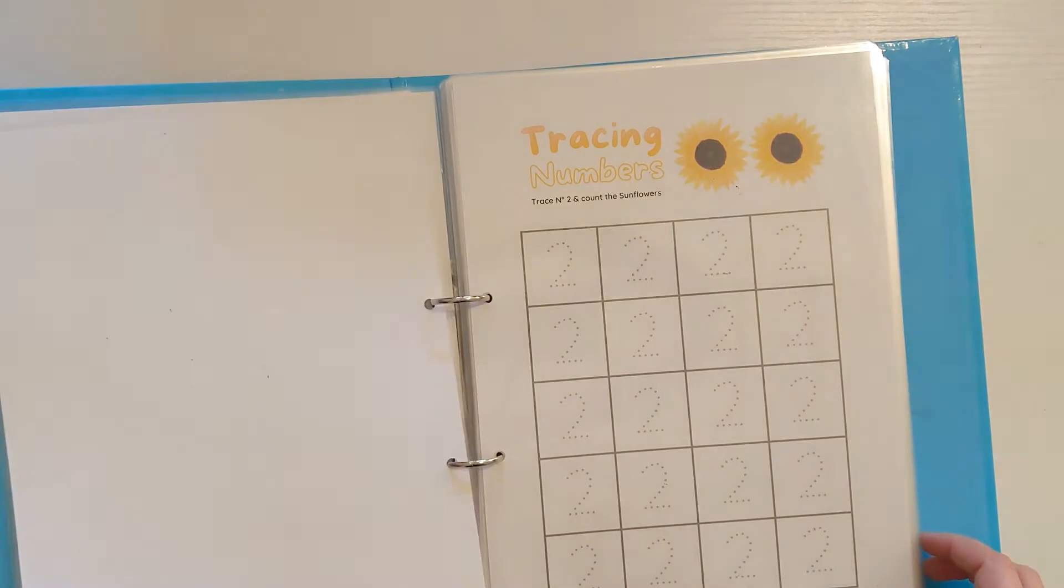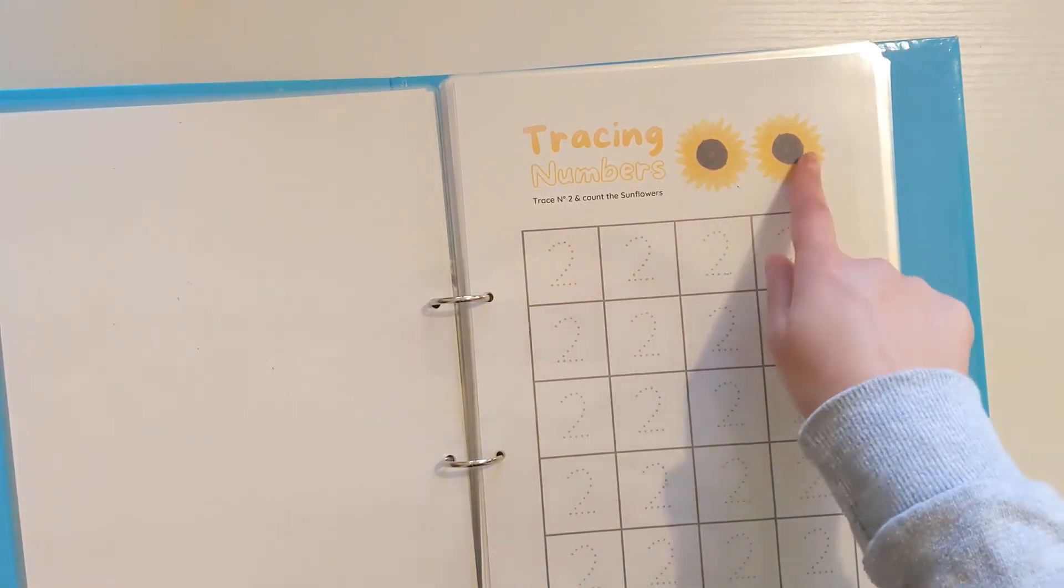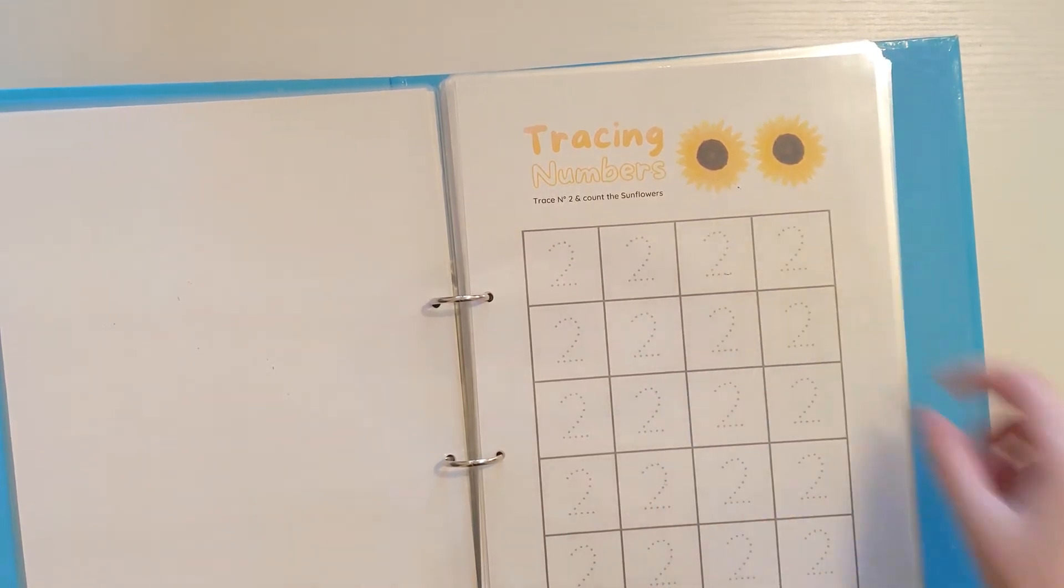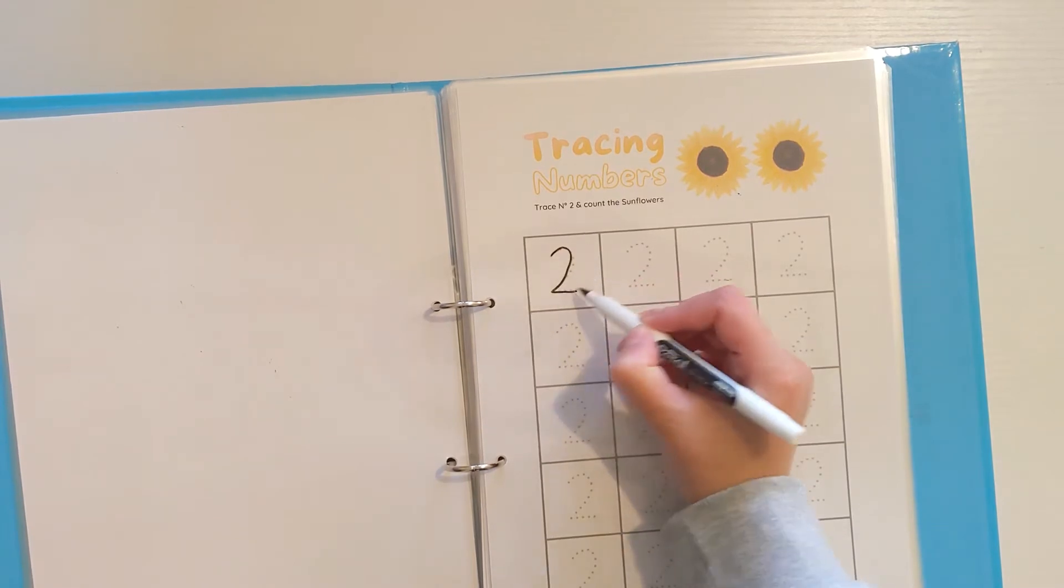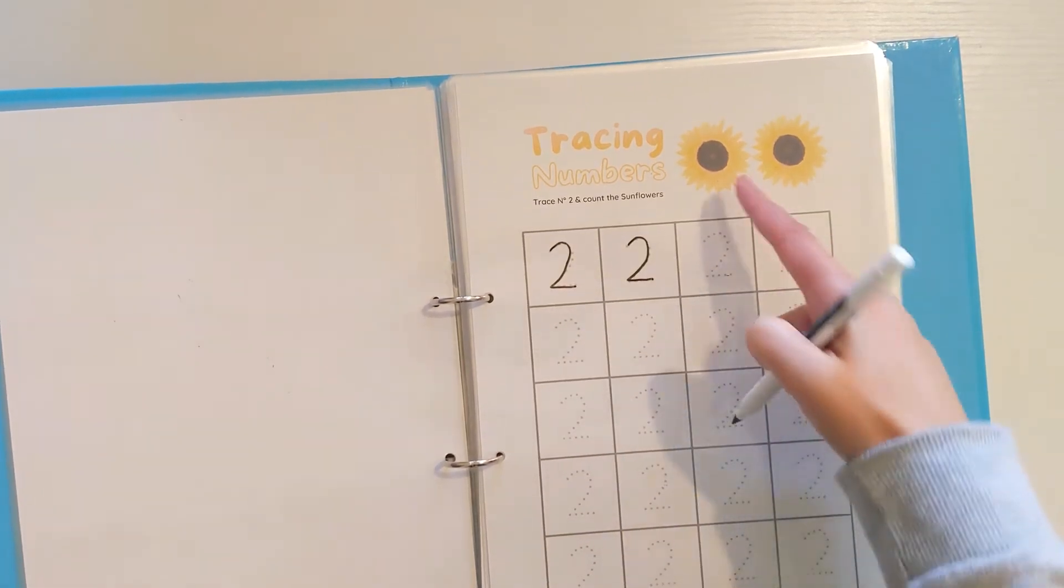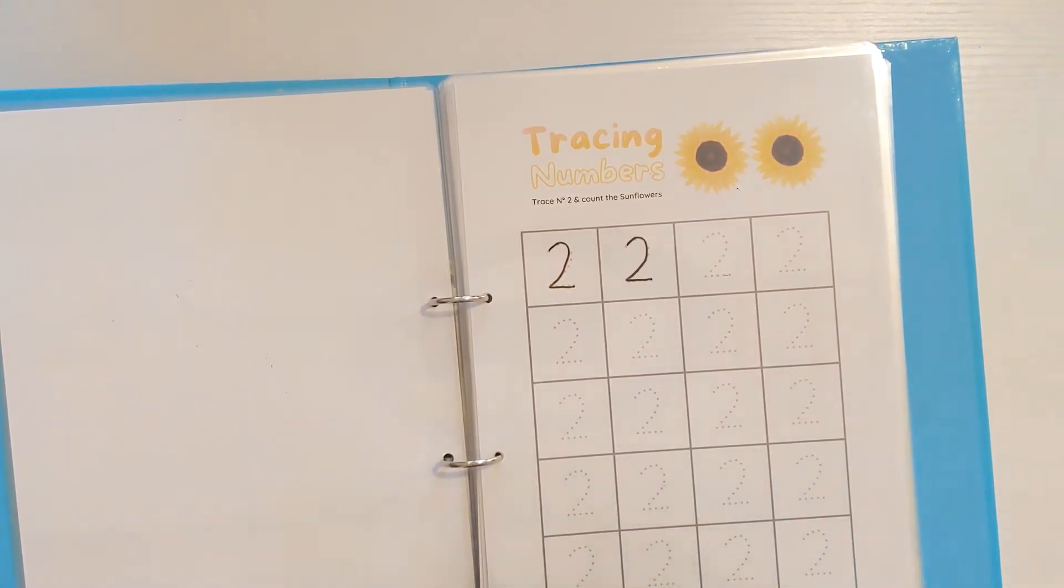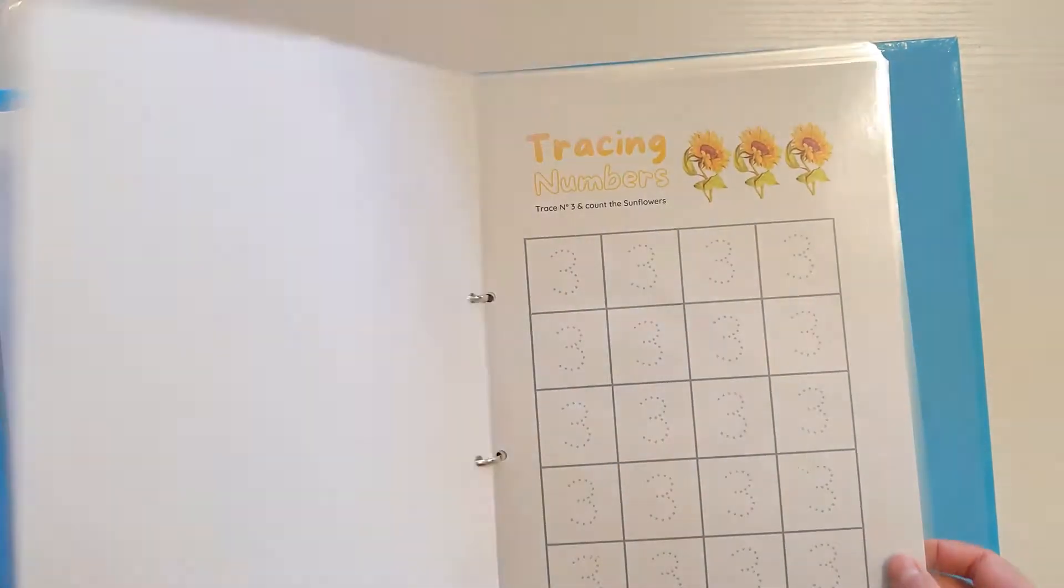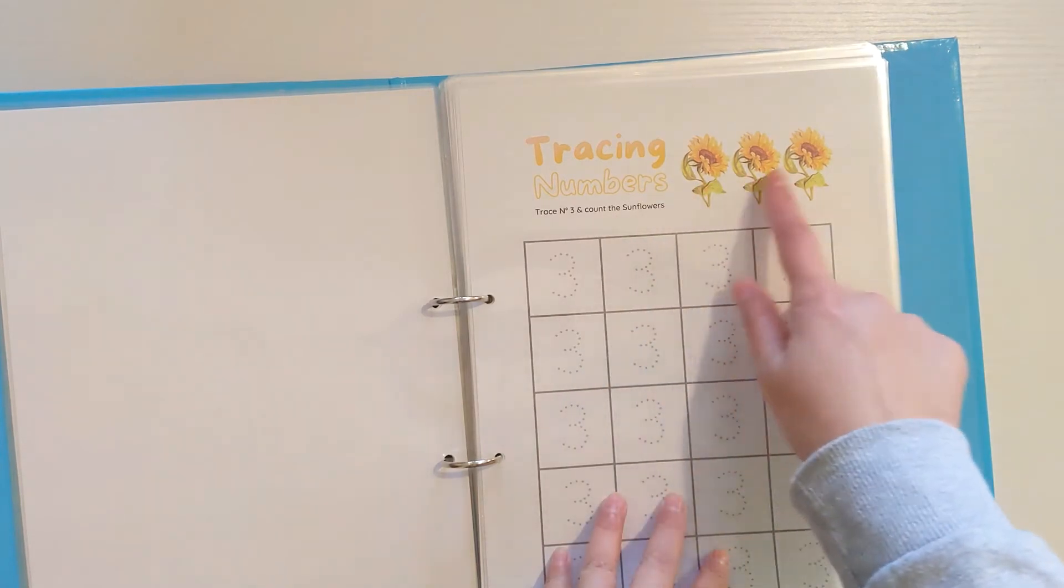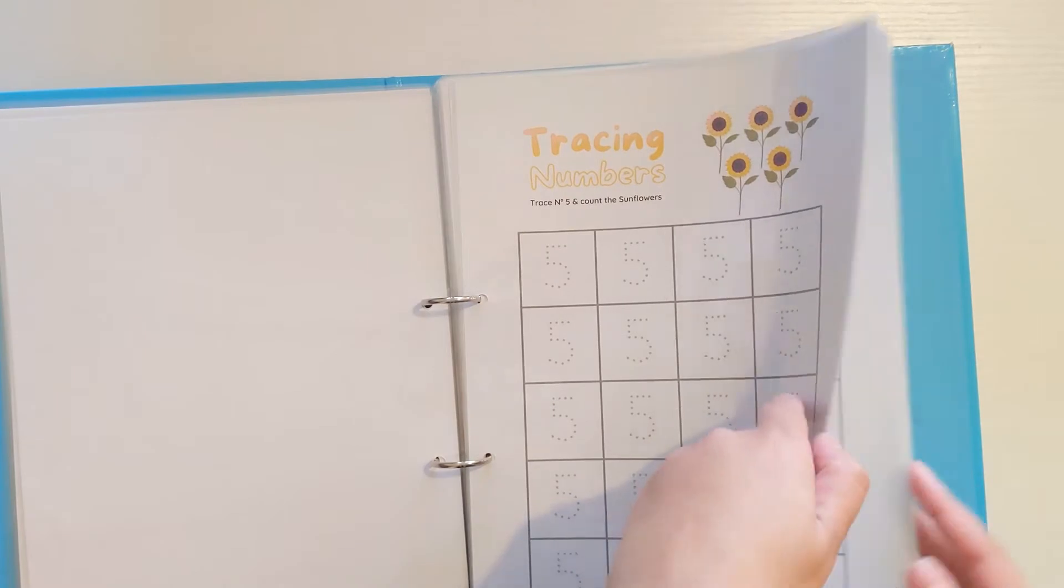These sheets are really cute. On the next page you've got two sunflowers, so trace number two and count two sunflowers. It's embedding that idea for the child that two is not just an arbitrary number. Number two means that you've got two objects that match the number. We've got all of these tracing number sheets, three sunflowers, four, five, all the way up to number nine.